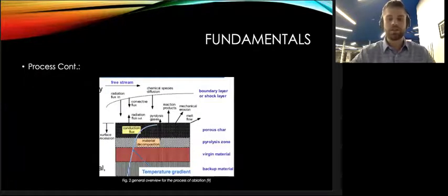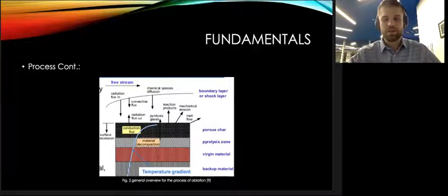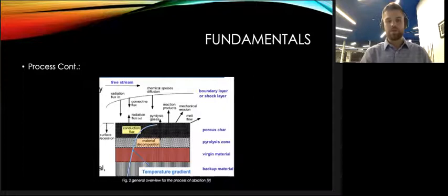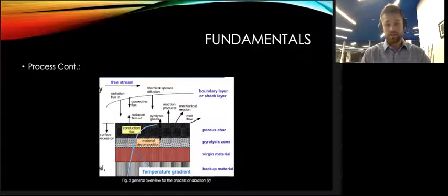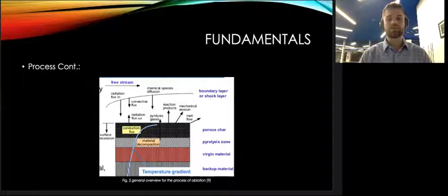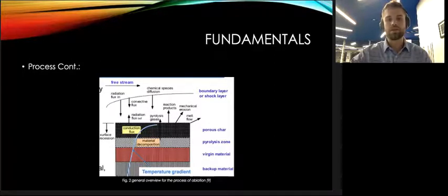This image here depicts everything that I just showed. You can see the red layer is the virgin layer, and this is where the pyrolysis gas stems from. It moves up through the pyrolysis zone where it accumulates pyrolysis gas, and this gas diffuses through the porous char. The rest of the image depicts all the different forms of heat transfer. It also shows mechanical erosion, which is the ablation itself.